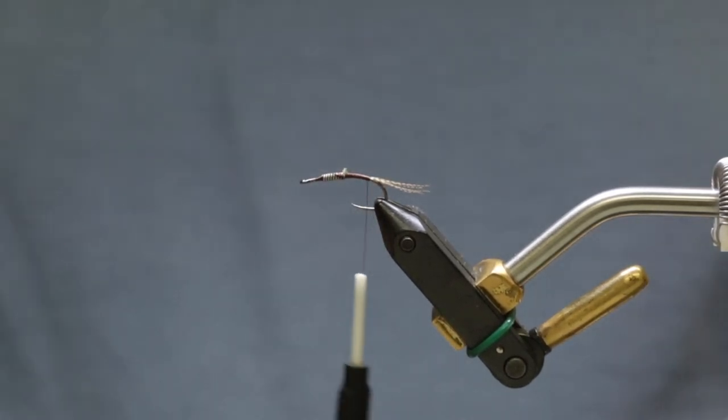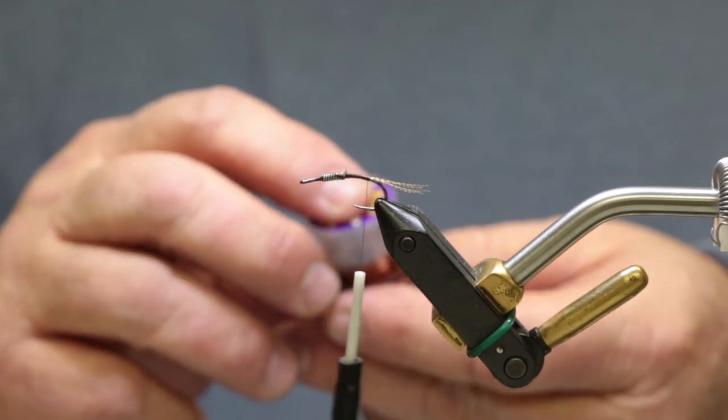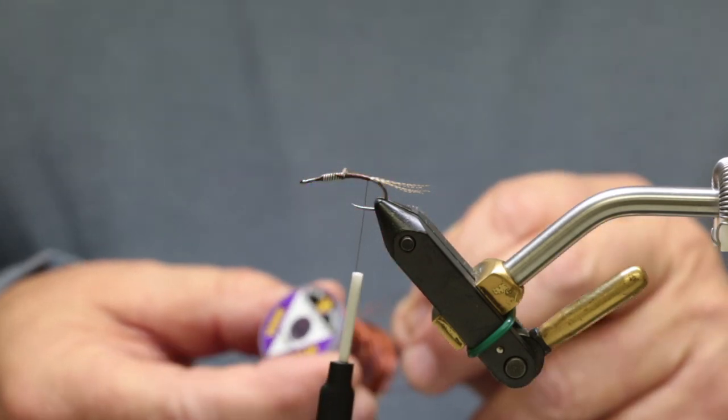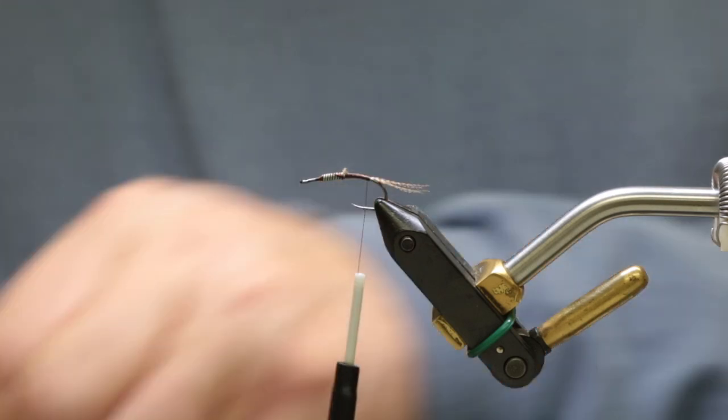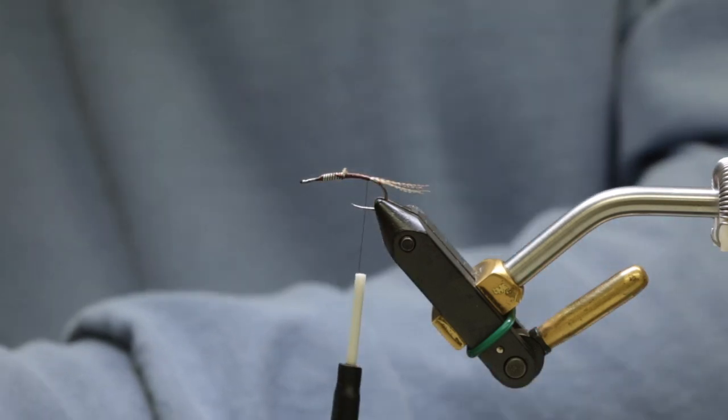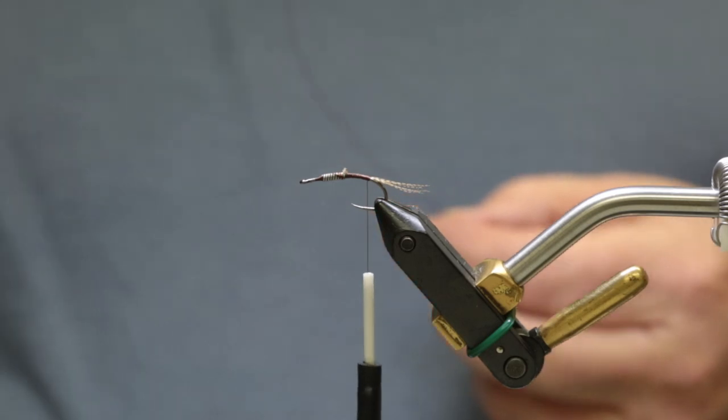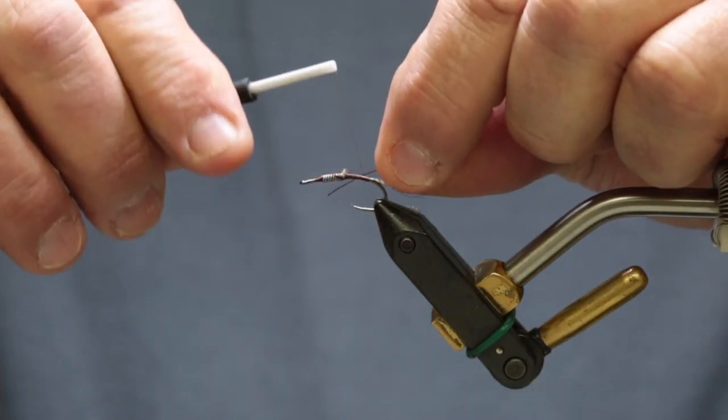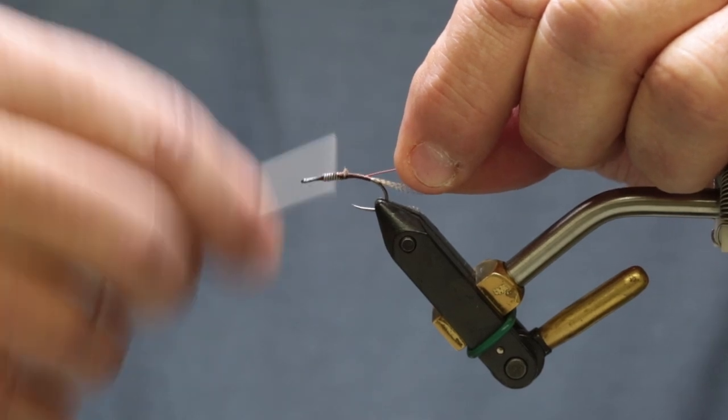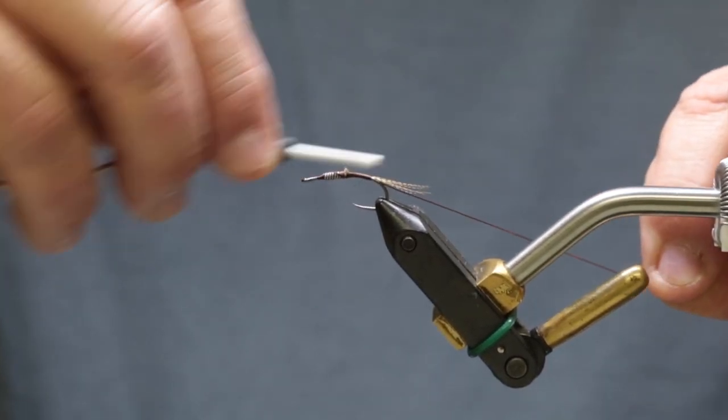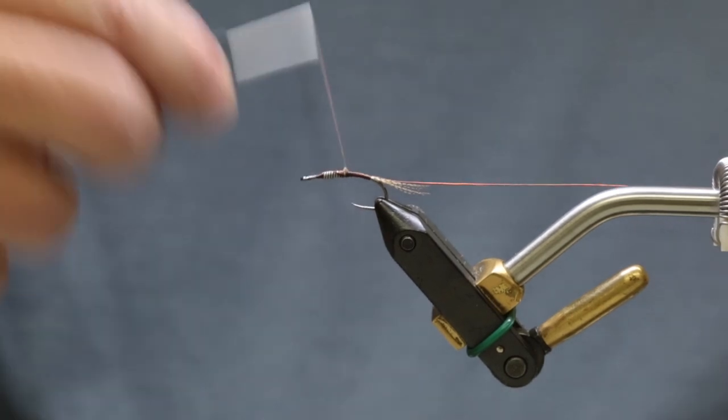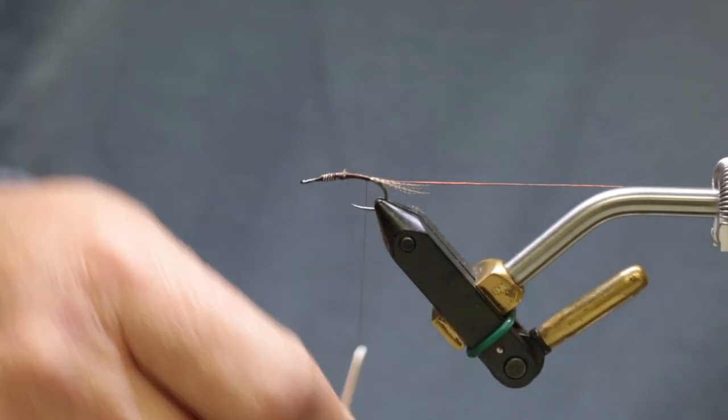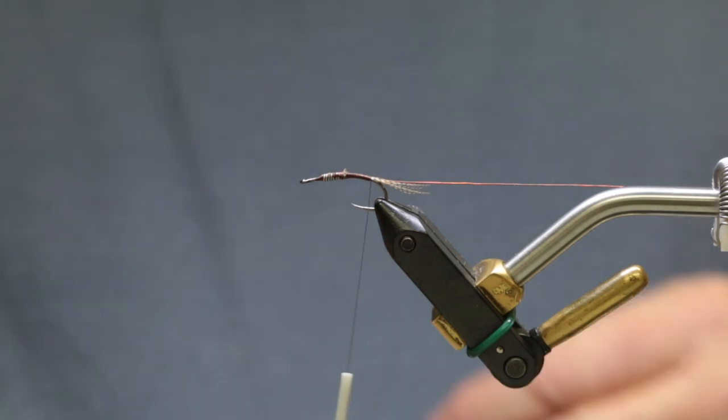Now we're going to use some brown copper wire, UTC, and it's a size brassy. Always use an old pair of scissors to cut your wire—you don't want to dull your good ones up. That'll help fill that gap up. Just keep going back and forth until you get that little void filled up.